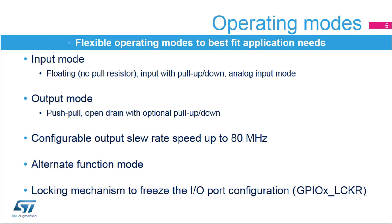General purpose I/O pins can be configured into several operating modes. An I/O pin can be configured in an input mode with floating input, input mode with an internal pull-up or pull-down resistor, or as an analog input. An I/O pin could also be configured in an output mode with a push-pull output, or an open-drain output with an internal pull-up or pull-down resistor. For each I/O pin, the slew rate speed can be selected from four ranges to compromise between maximum speed and emissions from the I/O switching and adjust the application's EMI performance.